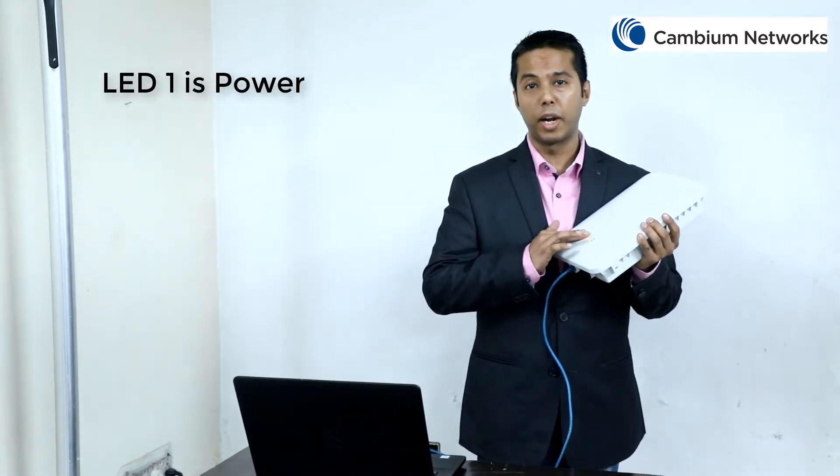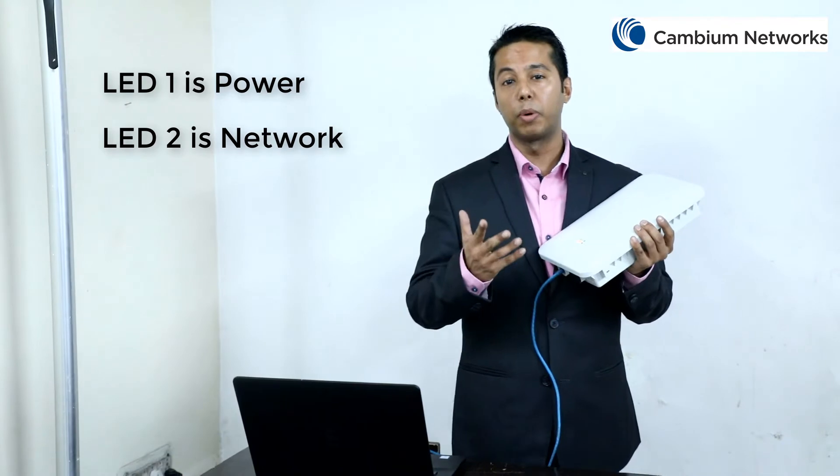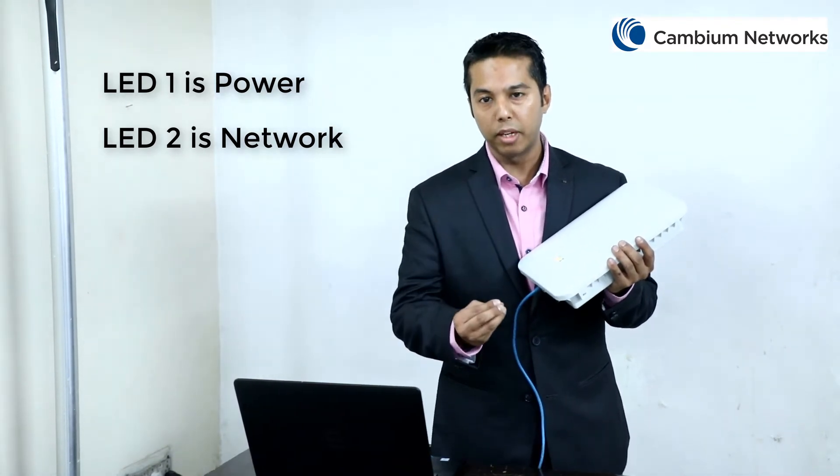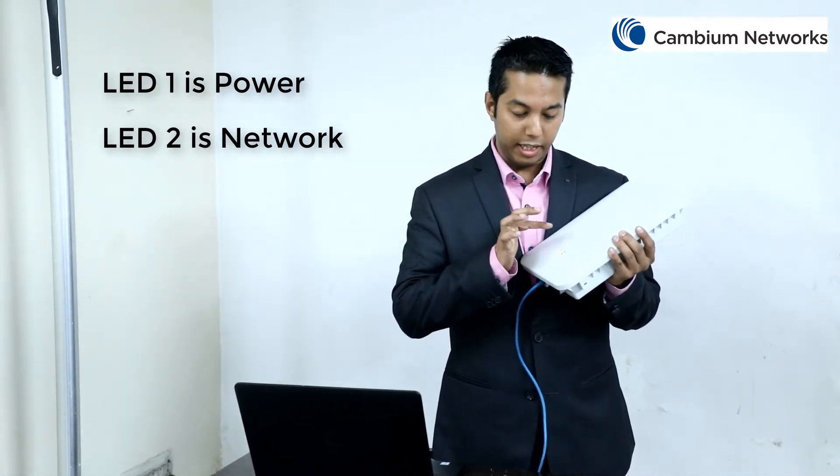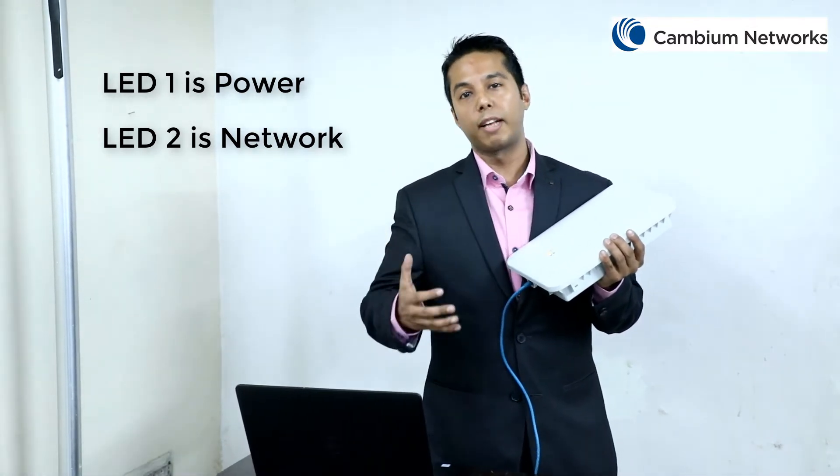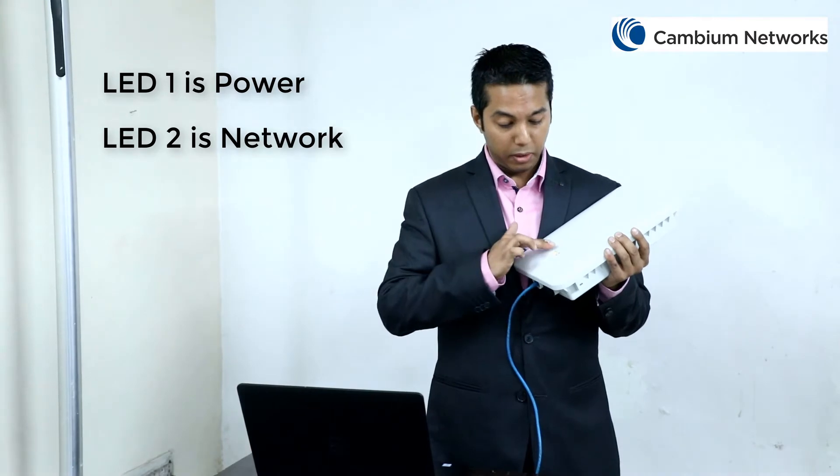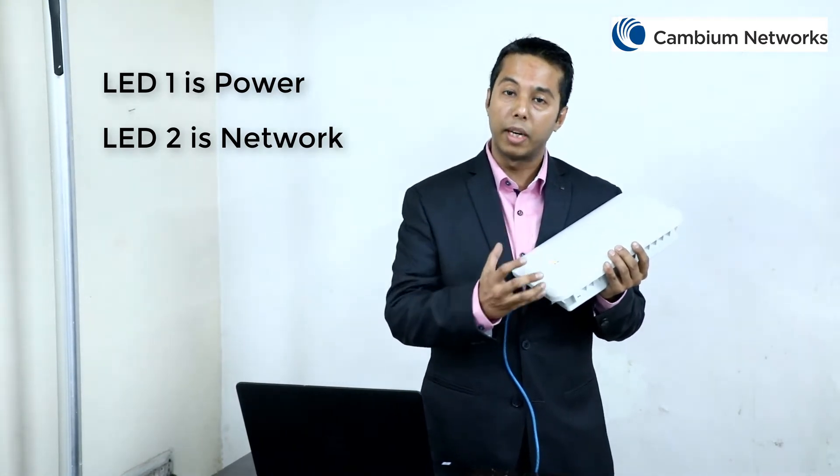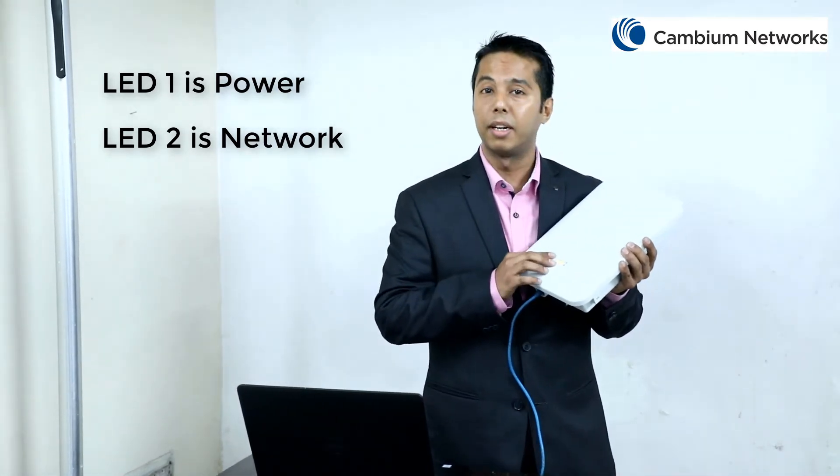As you can see, this access point comes with two LEDs. The LED1 is a power LED and the LED2 is a network LED. When the access point is booting up, at that time, the LED1, which is the power LED, would actually glow amber in color. And once the access point boots up properly, this particular LED would actually glow green in color, the way it is depicted here.